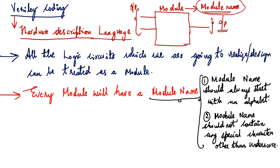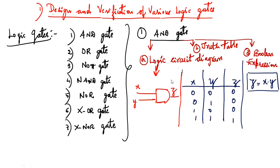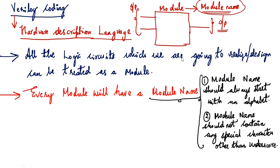EDA Playground is a tool for writing hardware description language code. In this context, the AND gate symbol is considered as a module. The module has two inputs and one output. All logic circuits we design can be treated as a module, and every module will have a module name.